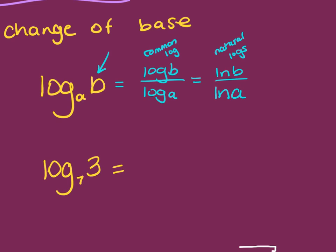So if I gave you log₇(3), log base 7 of 3, how would you rewrite that in a ratio of common logs? Good. Log 3 over log 7, and how would I rewrite it as natural log? ln 3 and ln 7.